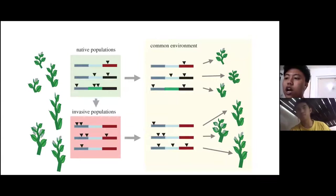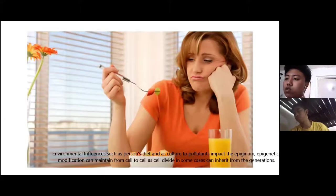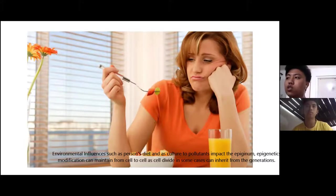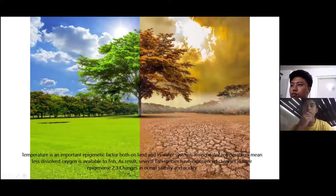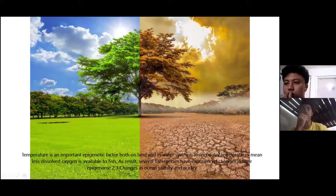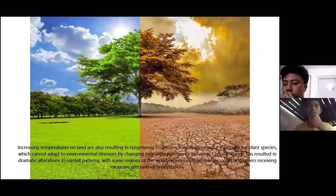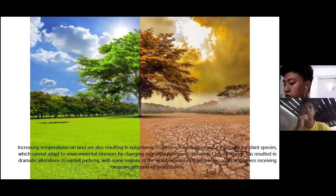There are biotic and abiotic interactions and how these are linked to fitness advantages. Environmental influences such as diet and exposure to pollutants can impact the epigenome. Epigenetic modifications can be maintained from cell to cell as cells divide and in some cases can be inherited through the generations. Temperature is an important epigenetic factor for both land and in-water systems. Rising water temperatures mean less dissolved oxygen is available to fish, and as a result, several fish species have experienced changes in their epigenome due to changes in ocean salinity and acidity. Increasing temperatures on land are also resulting in epigenomic responses from organisms, especially plant species, which cannot adapt to environmental stressors by changing migration patterns or behavior.